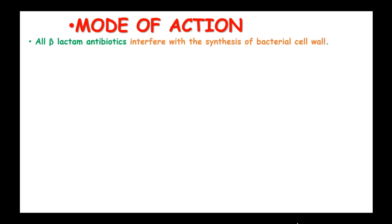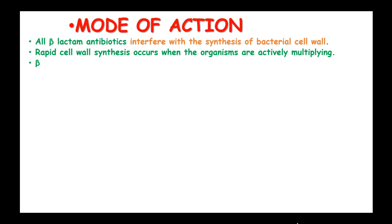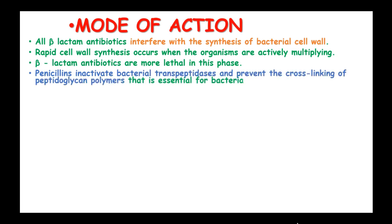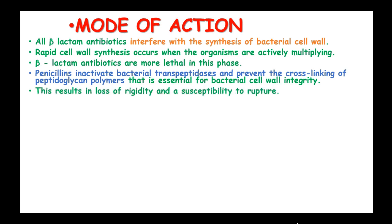What is the mode of action of penicillin? All beta-lactam antibiotics interfere with the synthesis of the bacterial cell wall. Rapid cell wall synthesis occurs when organisms are actively multiplying, and beta-lactam antibiotics are most active at this phase. Penicillins inactivate bacterial transpeptidases and prevent the cross-linking of peptidoglycan polymers that is essential for bacterial cell wall integrity. This results in loss of rigidity and susceptibility to rupture of these bacteria.